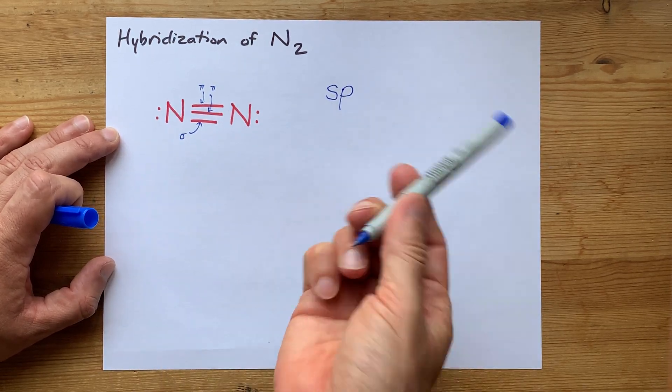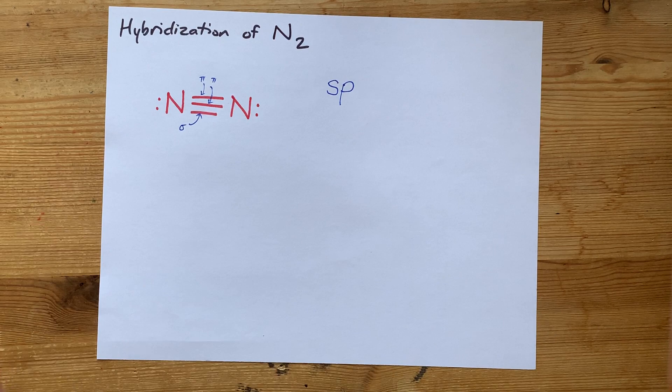The hybridization of each of these N's is sp. Let me show you that another way.